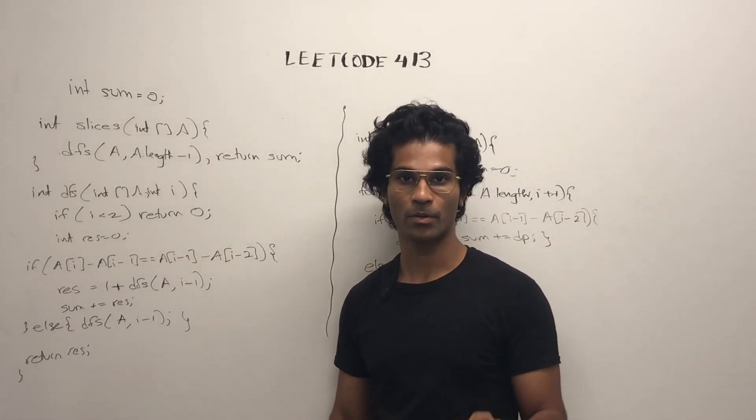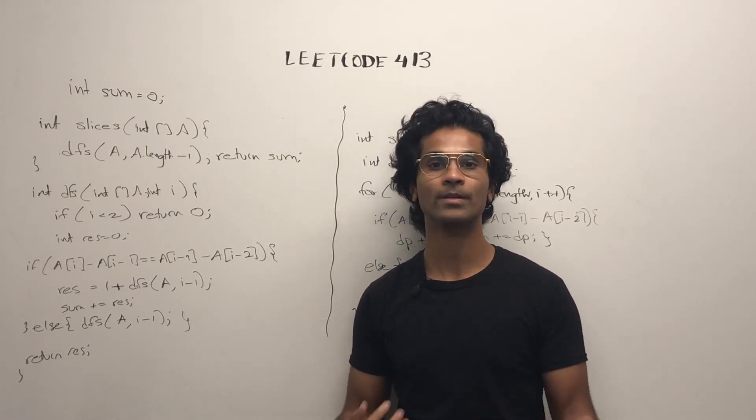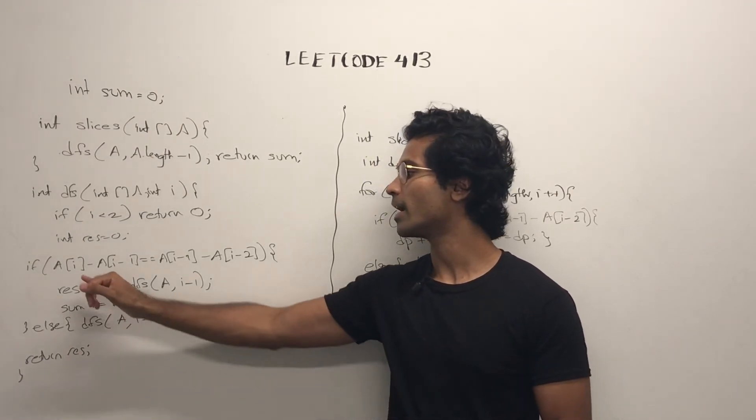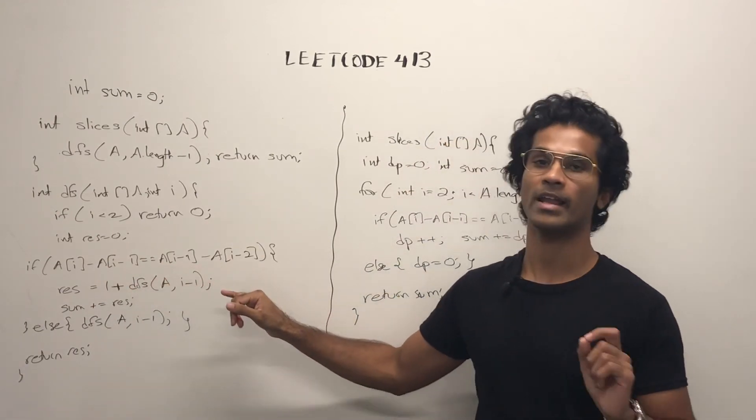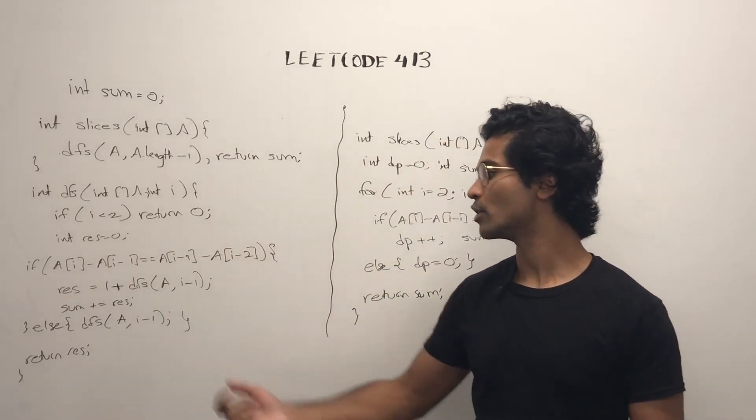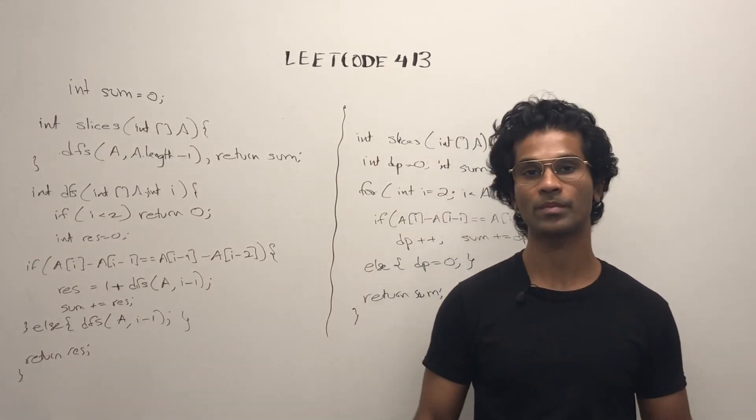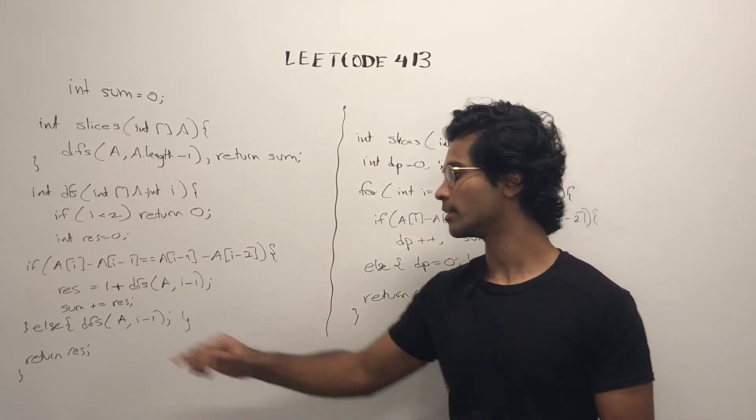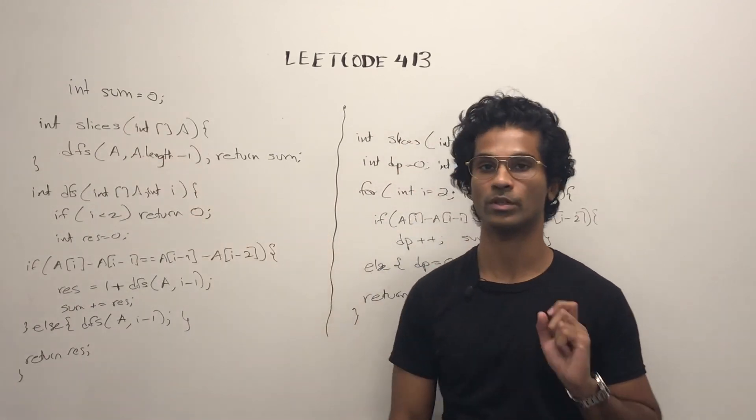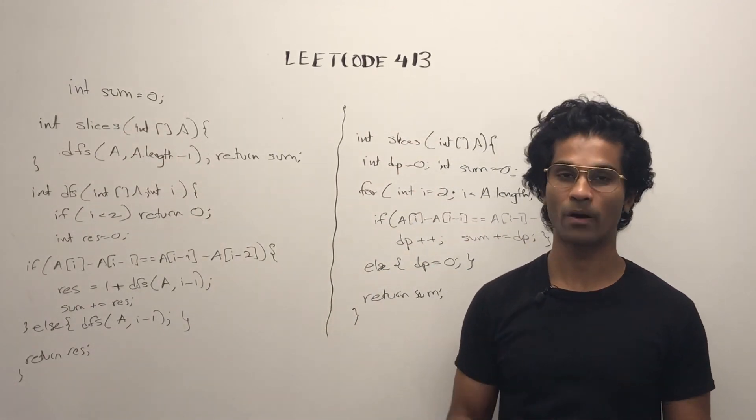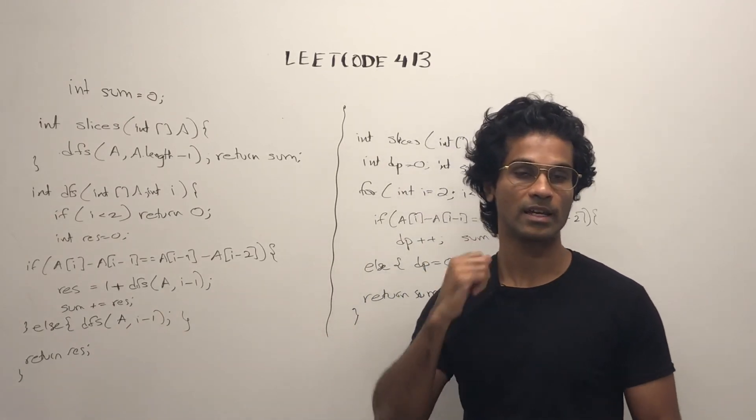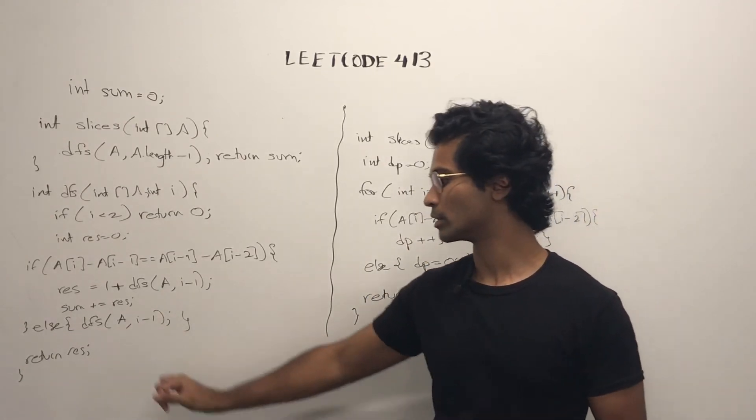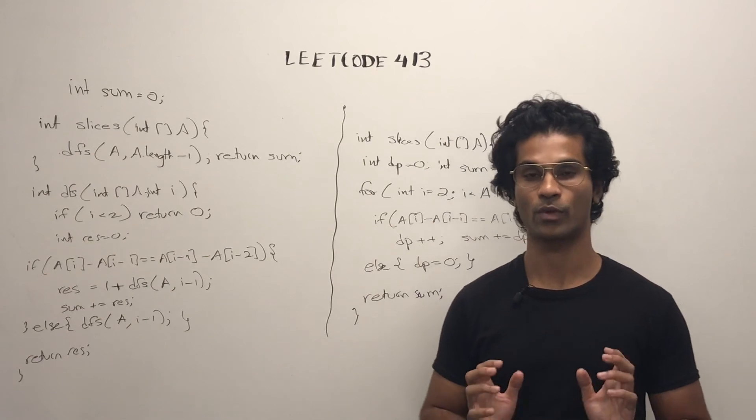Otherwise, we initialize our temp variable. First, we do an if conditional check to see if a[i] - a[i-1] is the same as a[i-1] - a[i-2]. If it is, we add 1 to the recursive call to make it 1 shorter, and we cumulate it to the sum that we're going to ultimately return. Otherwise, we don't just stop, we still recursively ask, and we just ignore at that stage what we need. But finally, we return res for that recursive stack.